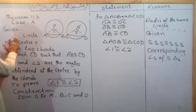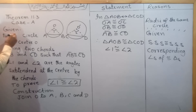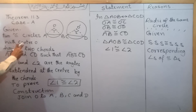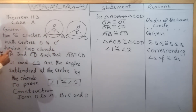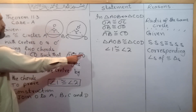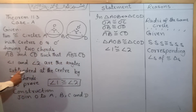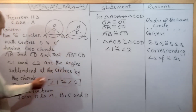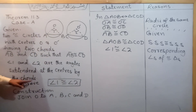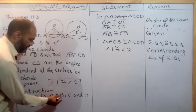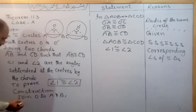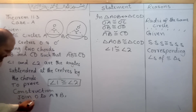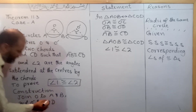Given: two congruent circles with centers O and O', having two chords AB and CD such that AB equals CD. Angle 1 and Angle 2 are the angles subtended at the centers by the chords. To prove: Angle 1 is congruent to Angle 2. Construction: draw OA, OB, O'C, and O'D.